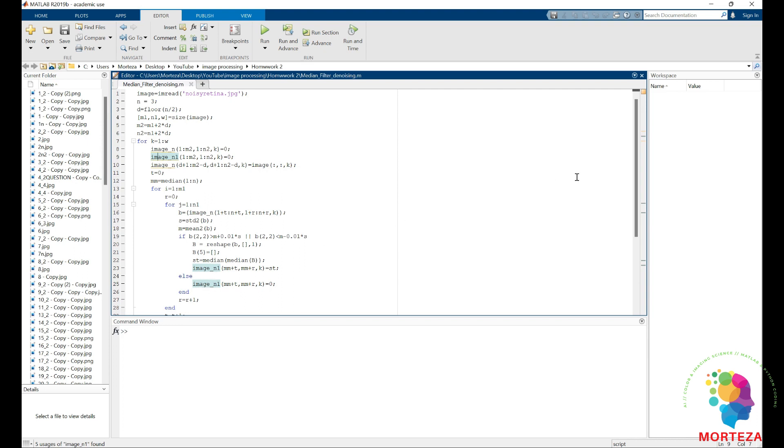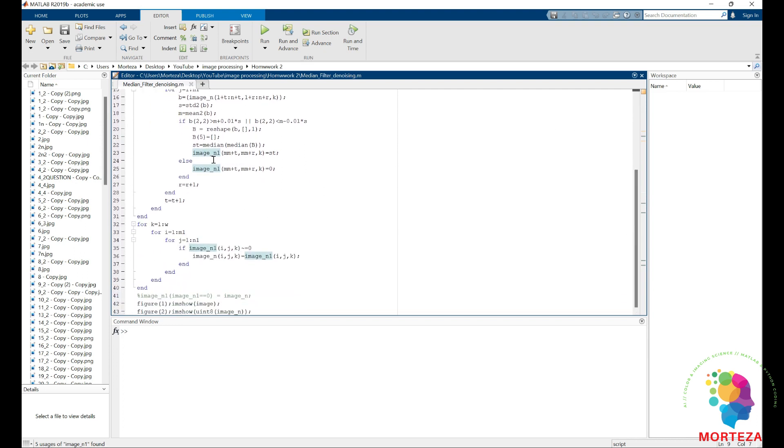This would help me later on to process the images more easily. So I would come down and I would say image N1, any of the elements that are not zero.